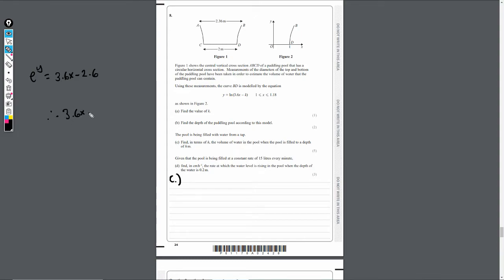So 3.6x is going to be equal to e^y + 2.6, like so. And then finally, we just got to divide by 3.6. Therefore, x is equal to (e^y + 2.6) / 3.6. So we've got it in terms of x now.